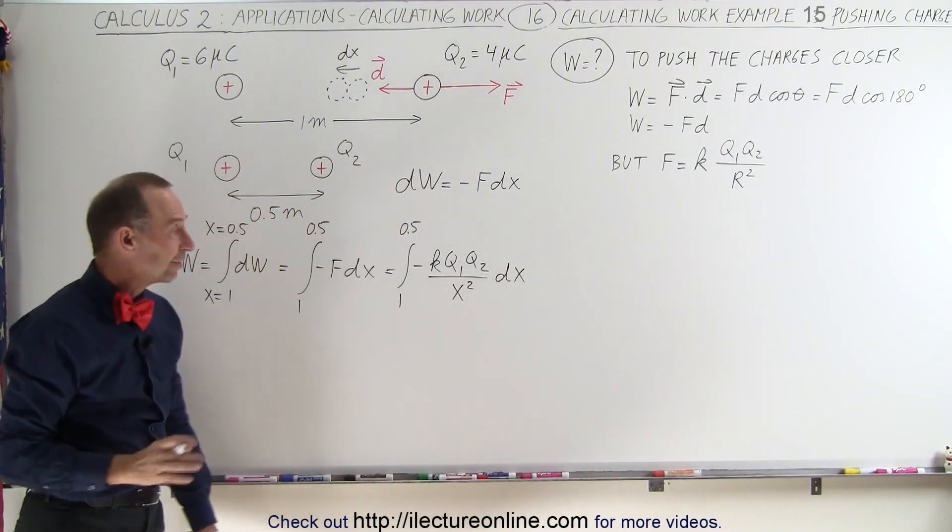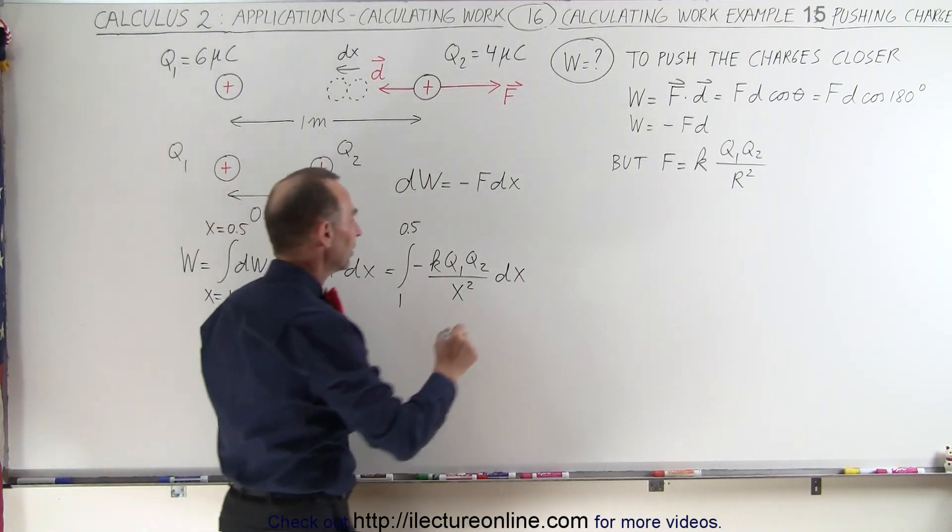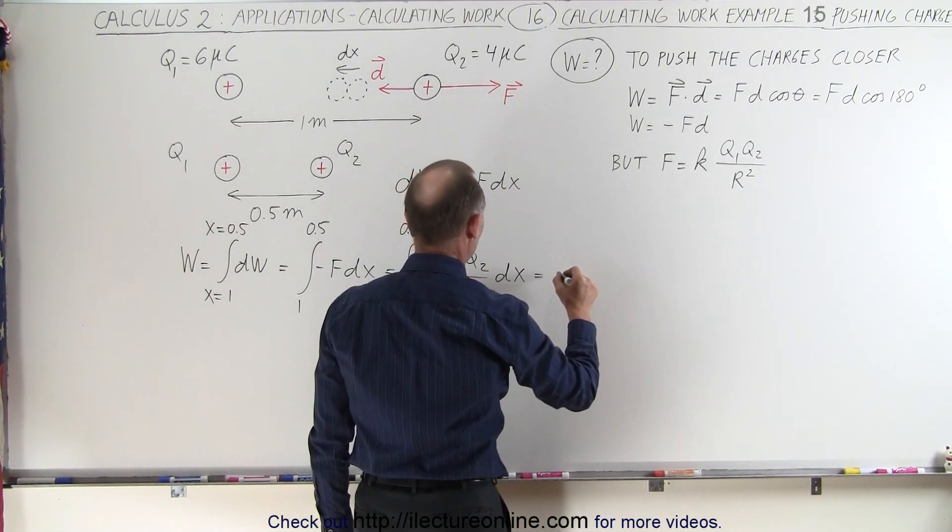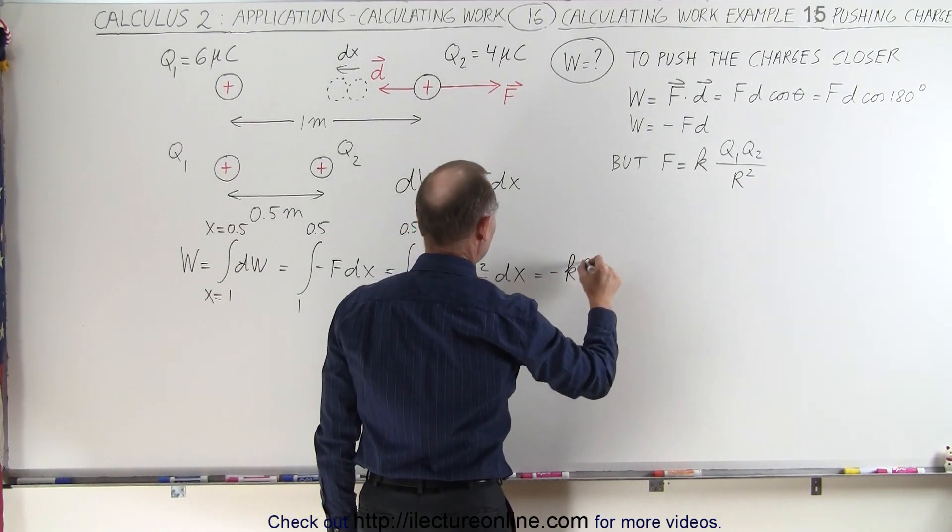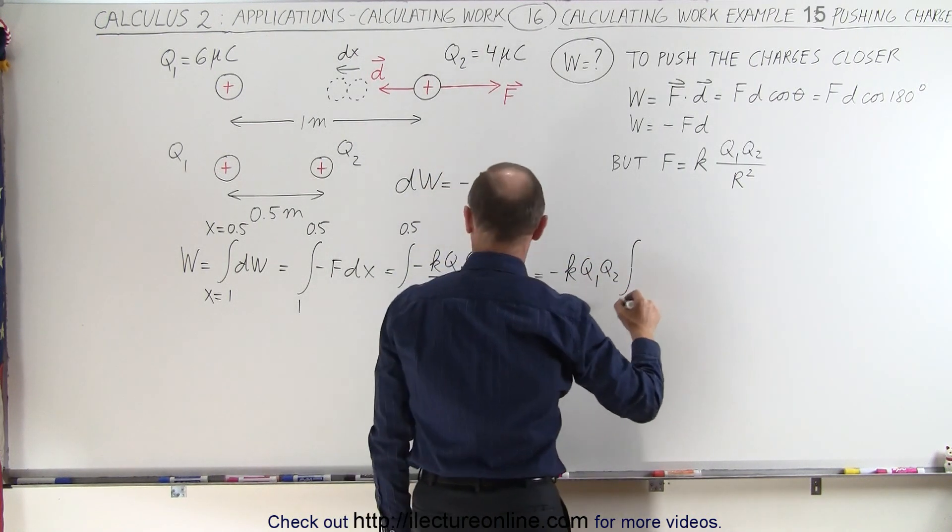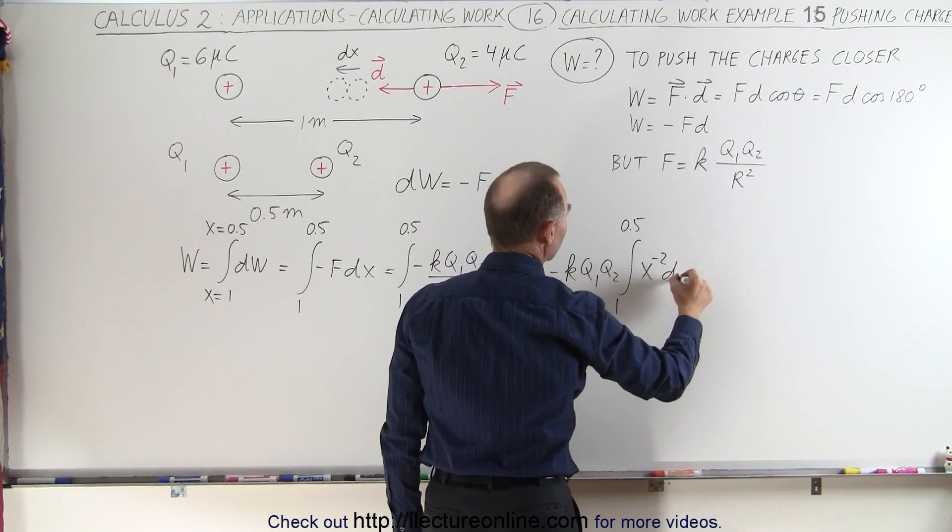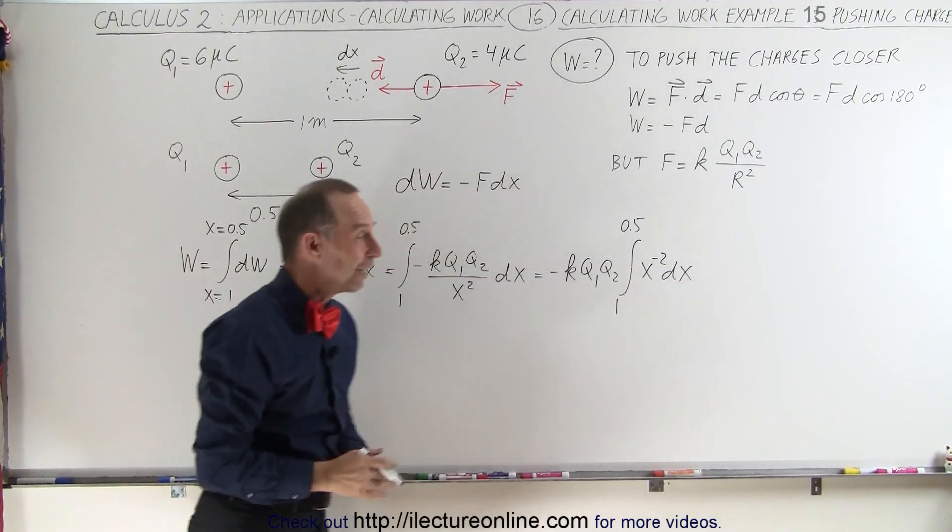And then we realize that kq1 and q2 are all constants. They can go outside the integral sign. So this becomes equal to minus kq1q2 times the integral from 1 to 0.5 of x to the minus 2 dx. And now we're ready to integrate.